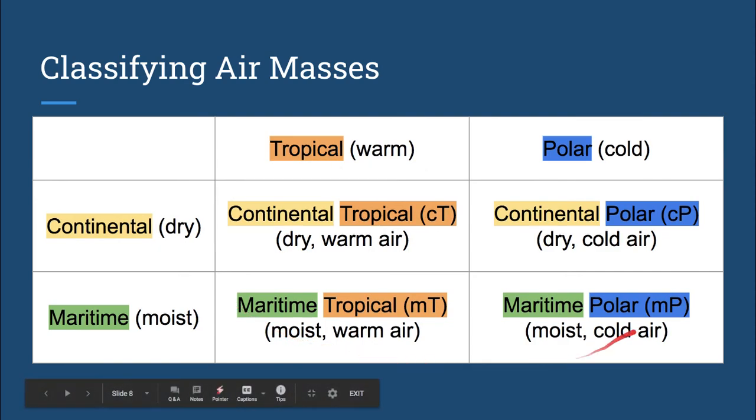Using these four different definitions, we can name just about any air mass on Earth. And understanding these air masses will be really important when we go to predict weather.